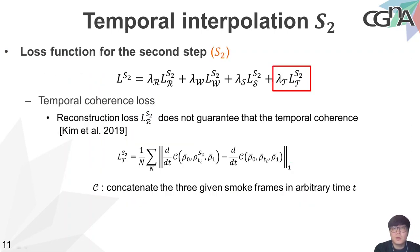The loss function of the second step is also similar to the first step. However, we added a temporal coherence term, which measures time derivatives between the generated temporal interpolation results and the input smoke frames, and compares them with the temporal coherence of the ground-truth frames. For other implementation details, training and test policies, please refer to the manuscript of the proposed method.